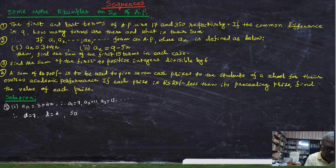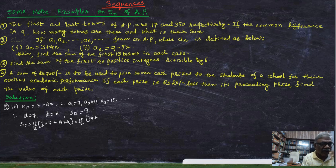And it is asked to find out S_15. So S_15 equal to 15 by 2, 2 into 7 plus 14, that's 15 minus 1 into 4. Simplifying this one, I can write down 15 by 2.